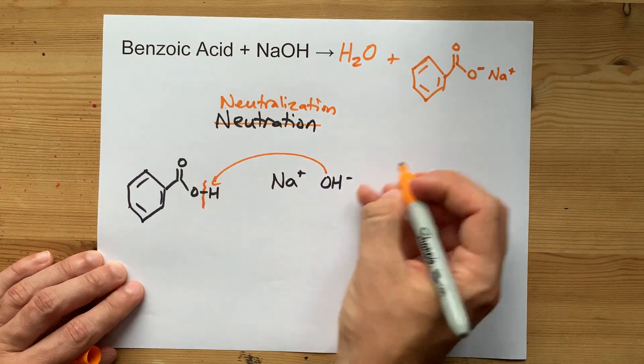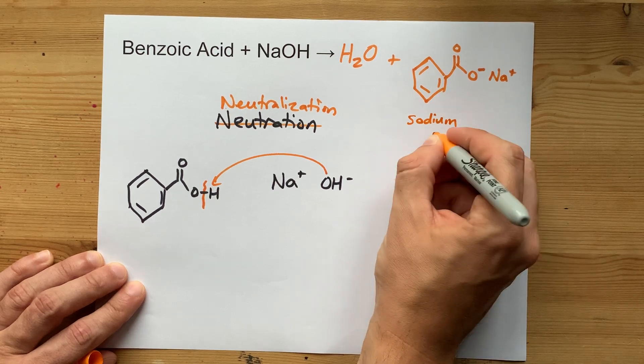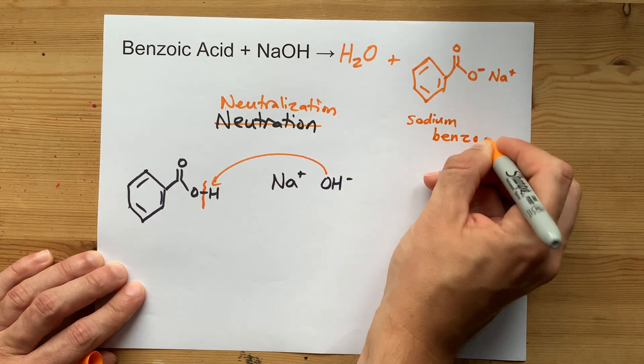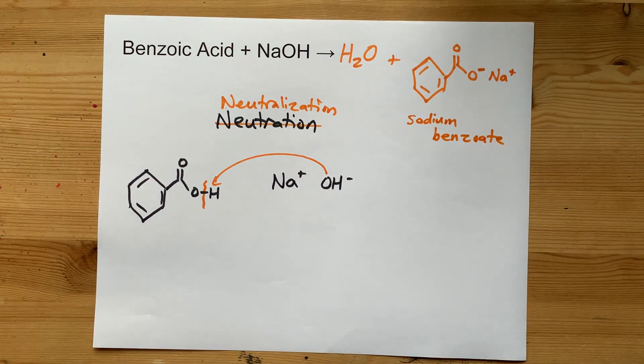Benzoic acid without its H is called benzoate, and this chemical itself is called sodium benzoate, which you've probably read in ingredient lists as a preservative. Cool.